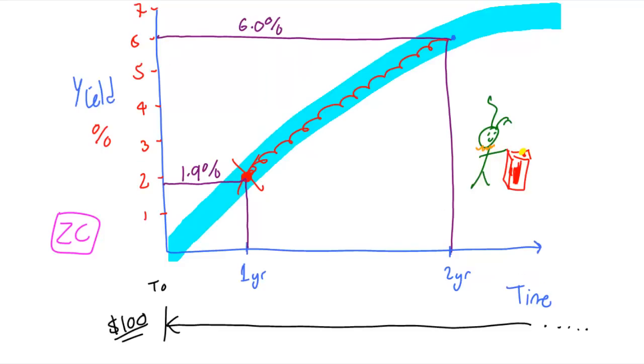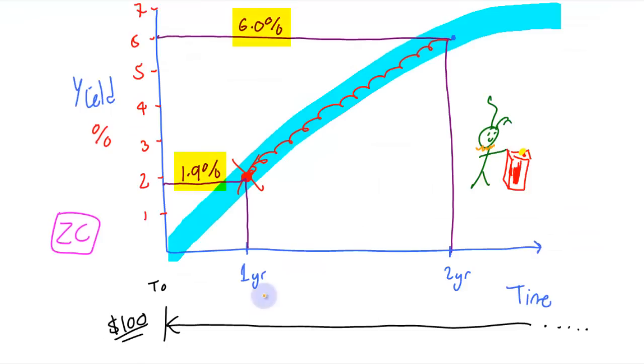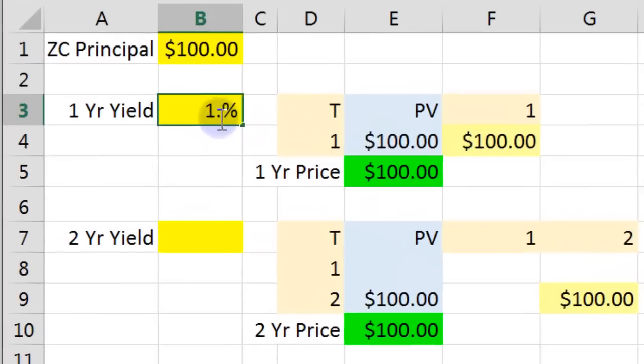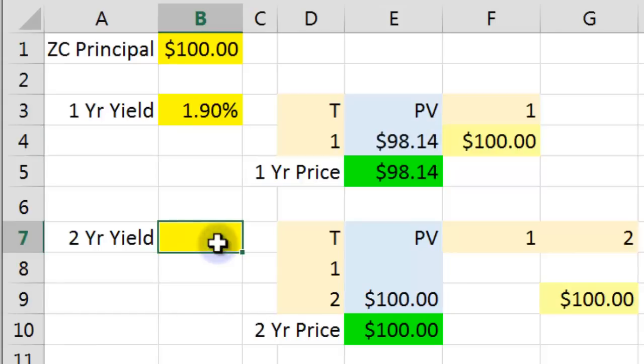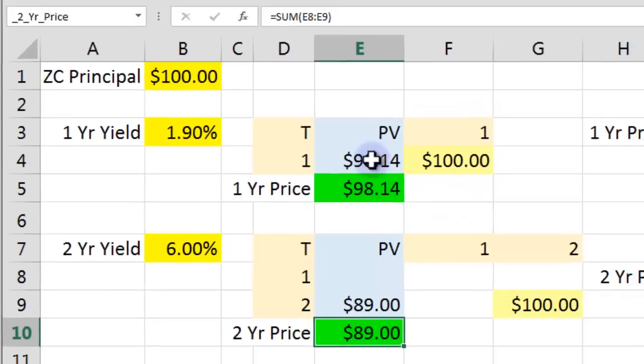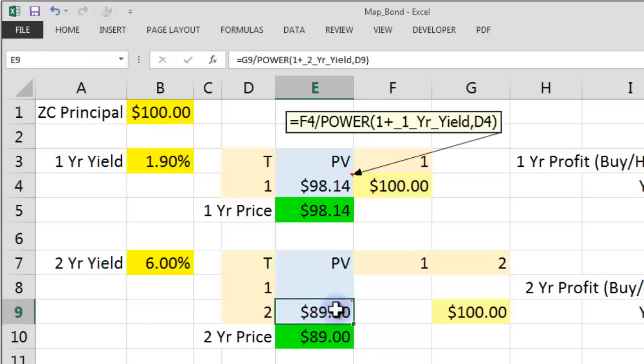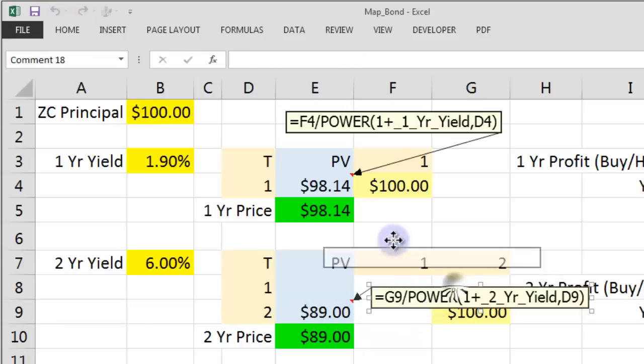Let's go to a spreadsheet I prepared earlier. I haven't put any interest rates in because I didn't know what they were. But there's the principal in one year of 100 and in two years. Let's get those interest rates again: 1.9 and 6. That gives us a price for the one year bond of 98.14 and for the two year bond of 89. We'll just comment those calculation fields so you know what's going on.